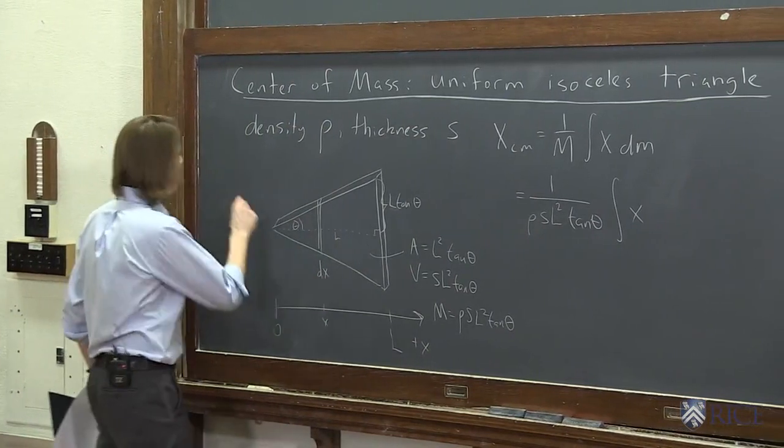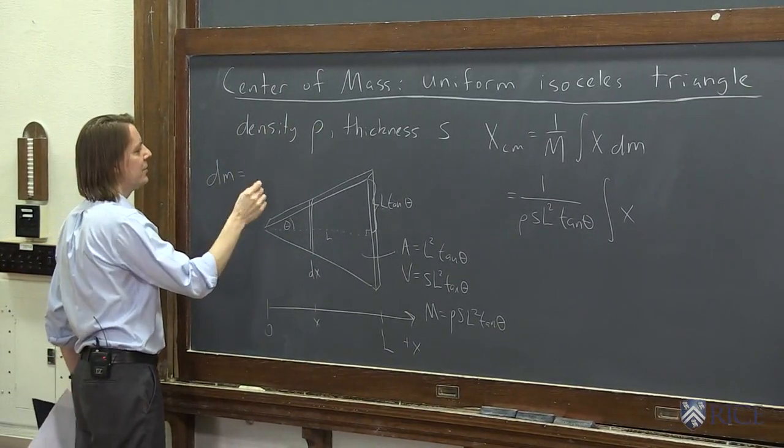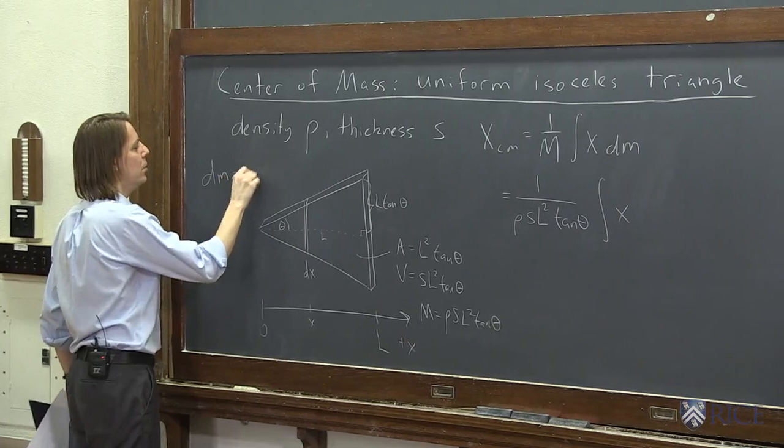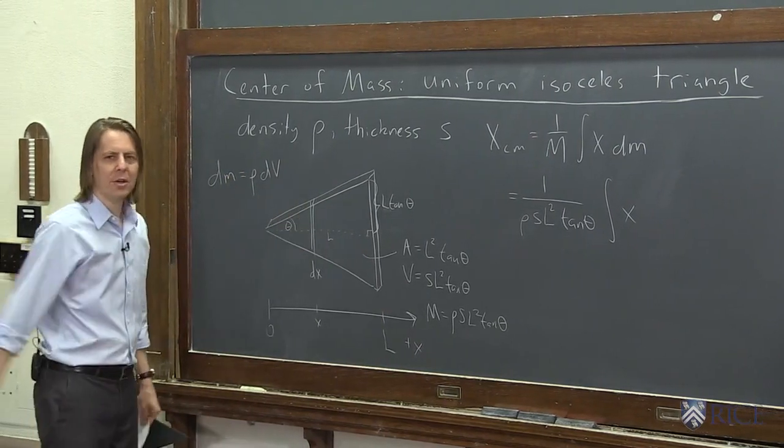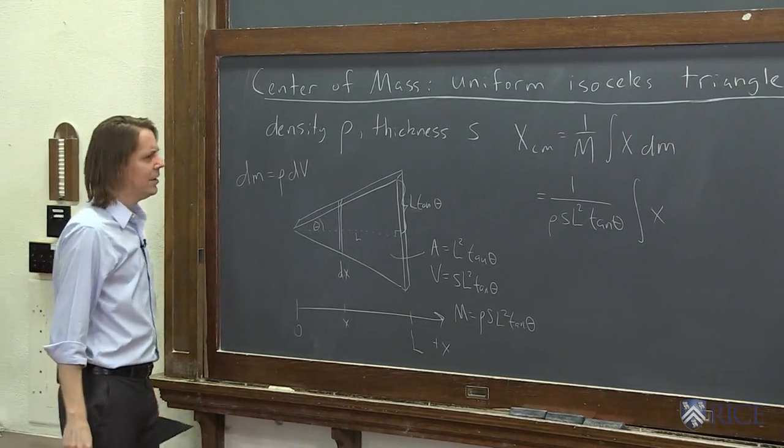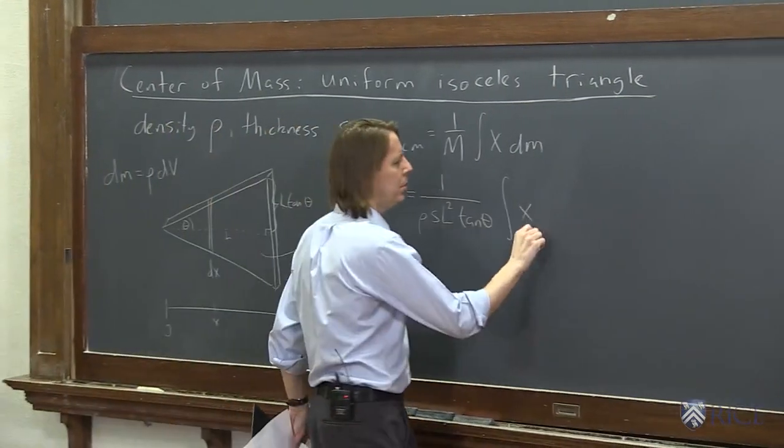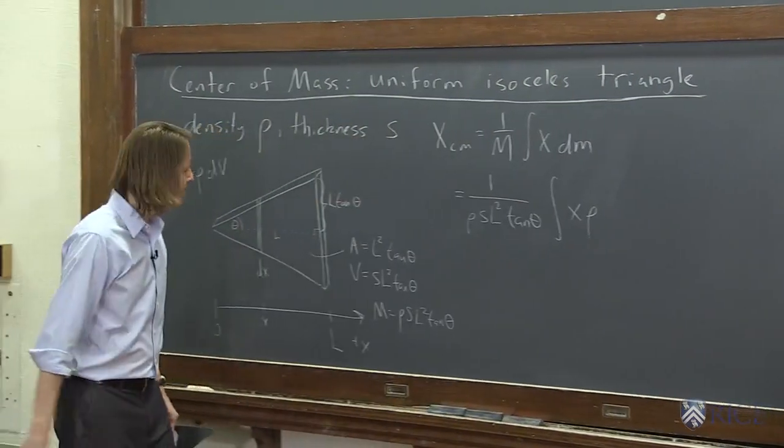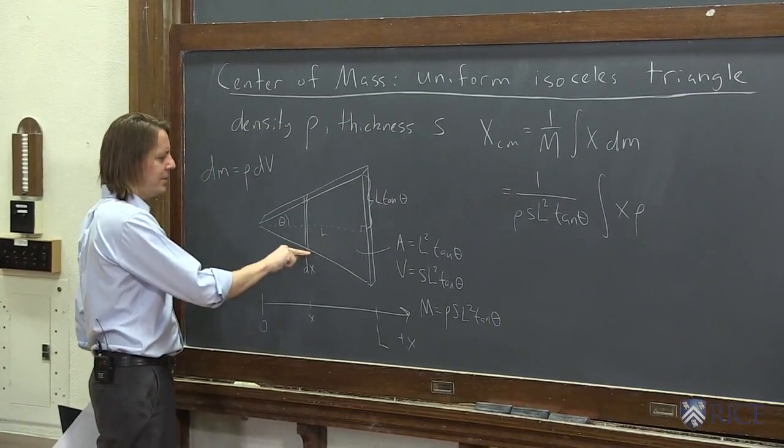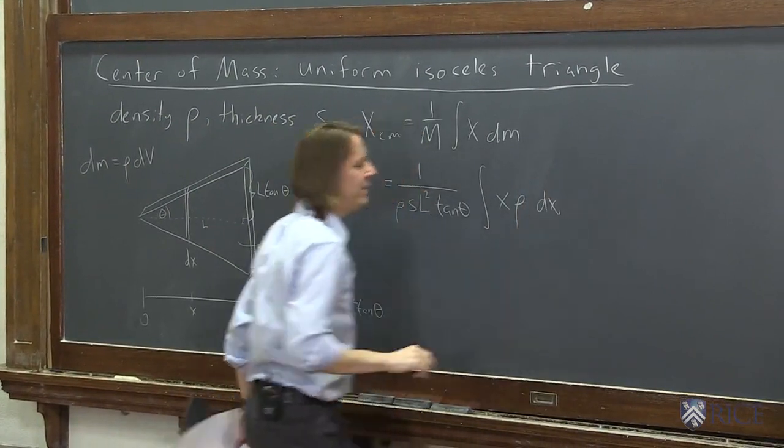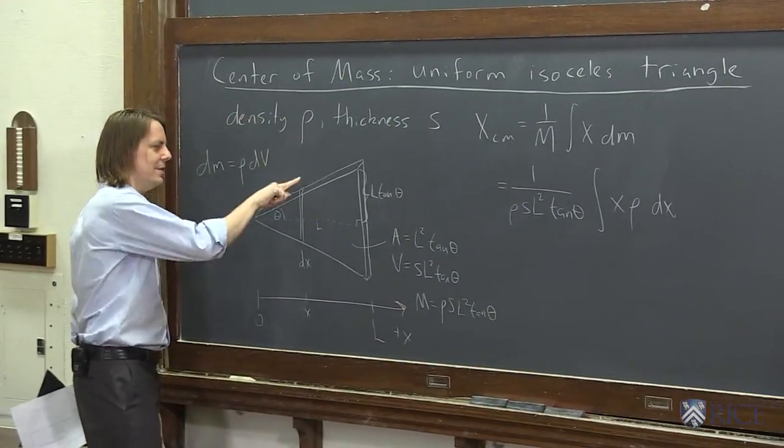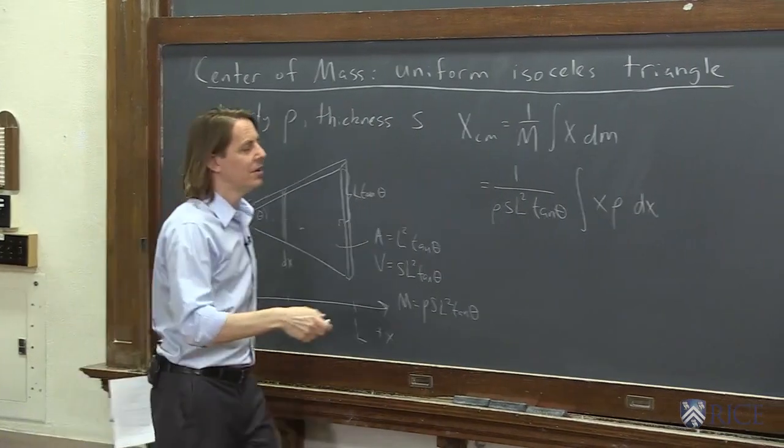So let's see. X is just X. X is where we are. But then DM is the hard part. So DM, like before, DM, in this case, well, the DM is rho times DV. So we've got to get the volume of this little slice. Let's see. So it's rho. And then the DV is going to be, well, let's see. In one dimension, it's DX. It's that way as DX. That one's easy. In S, in this dimension, in the board, it's S.